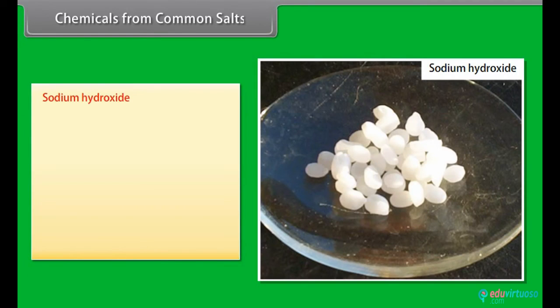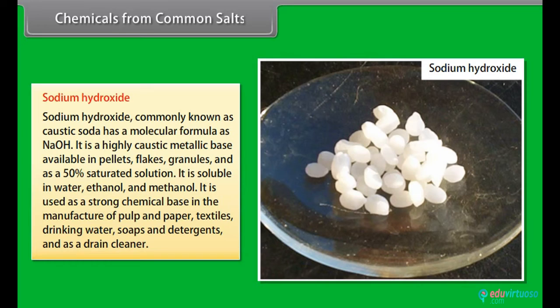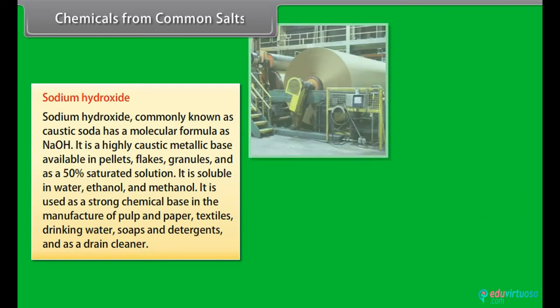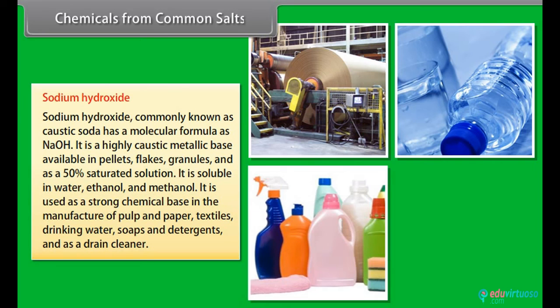Sodium hydroxide. Sodium hydroxide, commonly known as caustic soda, has a molecular formula as NaOH. It is a highly caustic metallic base available in pellets, flakes, granules and as a 50% saturated solution. It is soluble in water, ethanol and methanol. It is used as a strong chemical base in the manufacture of pulp and paper, textiles, drinking water, soaps and detergents and as a drain cleaner.